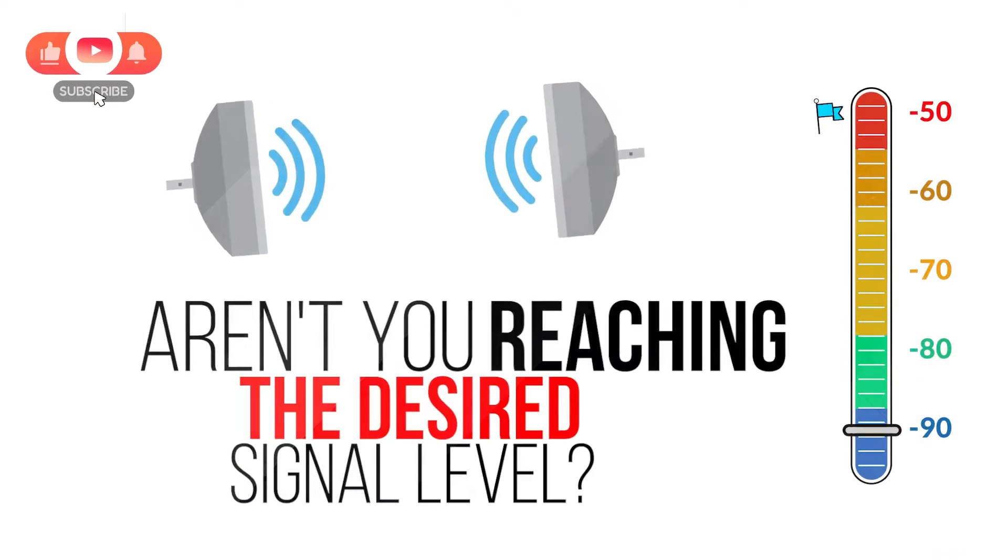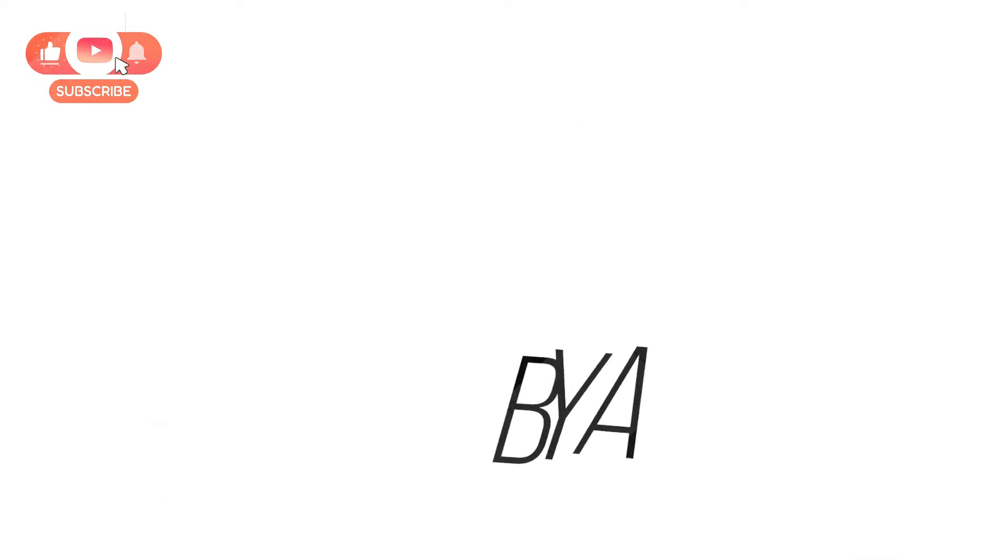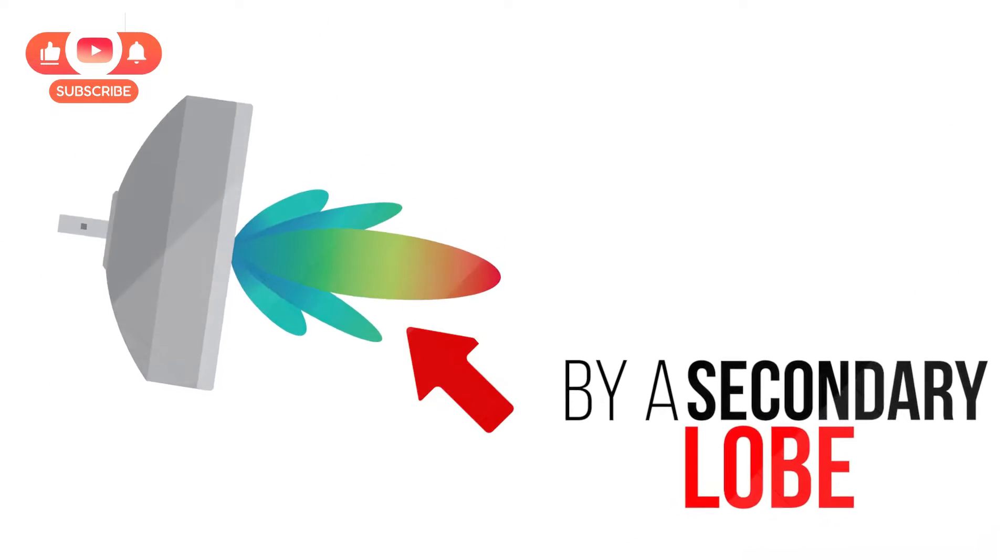JJAC Tech Channel. Aren't you reaching the desired signal level? You may be aligning the antenna with a secondary lobe. The antenna radiation diagram has many secondary lobes.